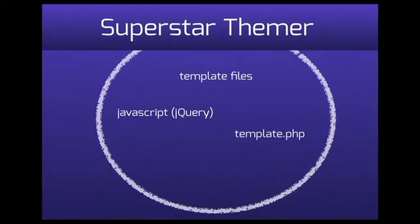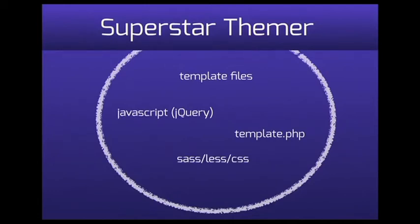Template.php is where all theme-related code goes — preprocess hooks and form hook alters for front-end look and feel all go in here. SASS and LESS are rendering engines for CSS. At the end of the day, we want projects delivered in days, not weeks, and by using productivity tools like SASS and LESS, you're achieving that in less time.